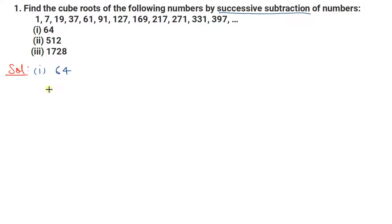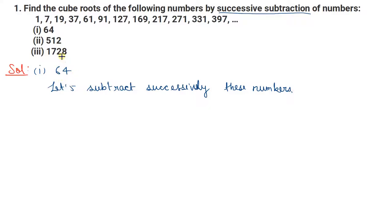First, let us find the cube root of 64. We will subtract these numbers successively — 64 में से 1 minus करेंगे, उसके बाद जो result आएगा उसमें 7 minus करेंगे, उसके बाद 19 minus करेंगे, and likewise हम करते जाएंगे जब तक की result zero न हो जाए। जितने steps में वो zero होगा, that will be the cube root of the number.